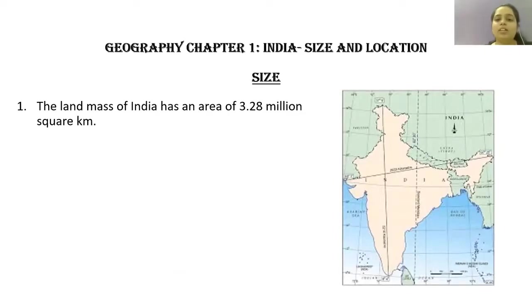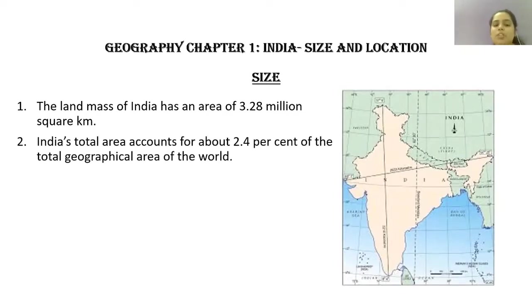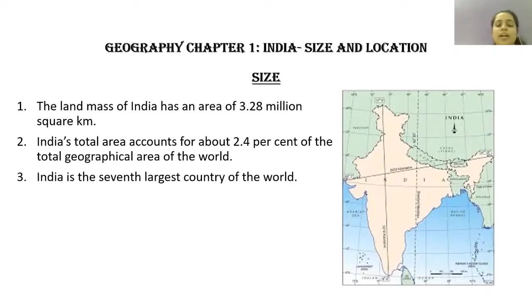Now let us have a look at the size of India. The landmass of India has an area of about 3.28 million square kilometers. India's total area accounts for 2.4 percent of the total geographical area of the world. India is the seventh largest country of the world.